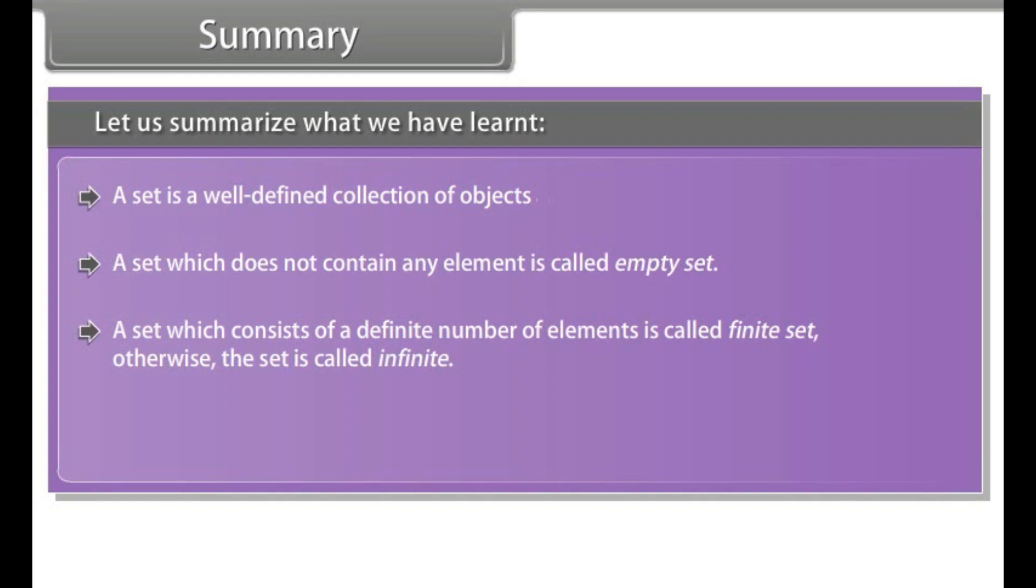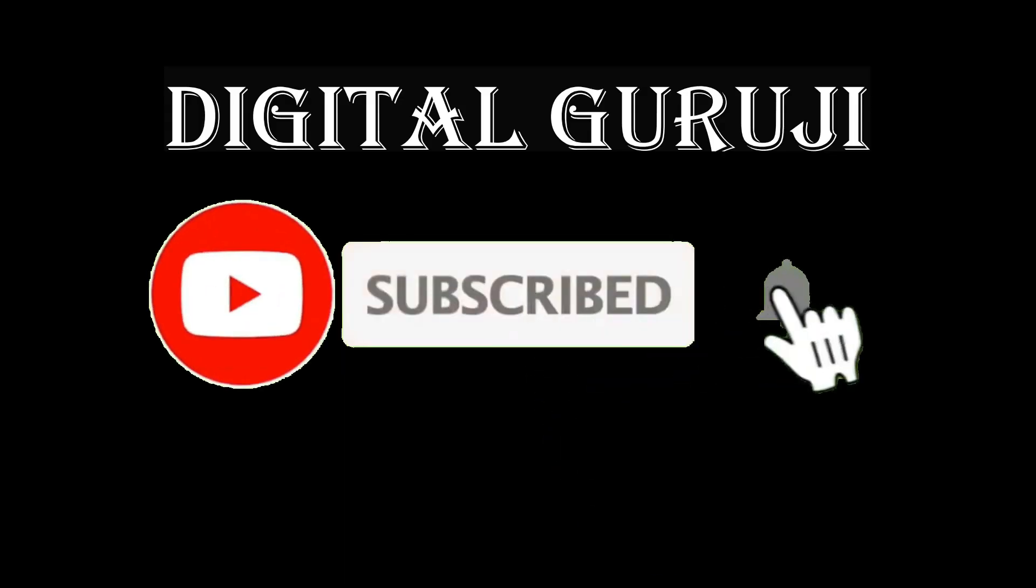A set which consists of a definite number of elements is called finite set. Otherwise, the set is called infinite. Two sets A and B are said to be equal if they have exactly the same elements.